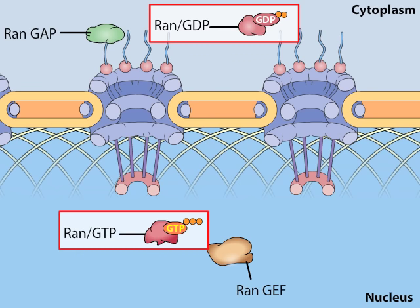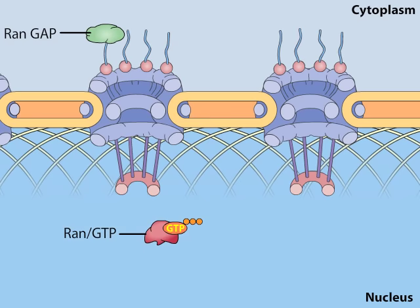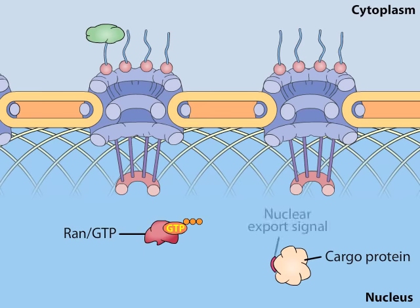Similar to imported proteins, proteins are targeted for export from the nucleus by specific amino acid sequences called nuclear export signals. Nuclear export signals are recognized by receptors within the nucleus called exportins, which direct protein transport through the nuclear pore complex to the cytoplasm.